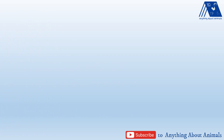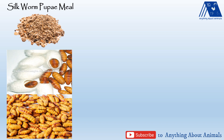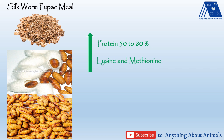Some unconventional sources include silkworm pupae. After the silk is extracted, the inside worm can also be used as an alternative protein source instead of soybean meal. The defatted larvae will have a protein content of 50 to 80 percent. They also have high lysine content, high methionine content, and their fat is nearly less than 10 percent. Based on the age of the larvae, the chitin content will be very much fluctuating.